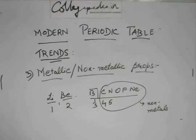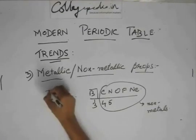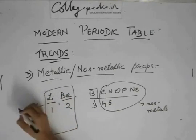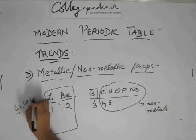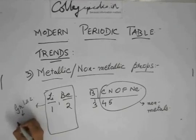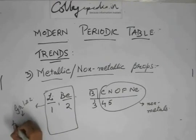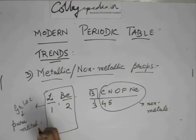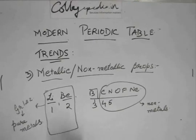On the left side of the periodic table, especially group 1 and group 2, they are pure metals. There are no metalloids or non-metals in these two groups — they are 100% all metals.